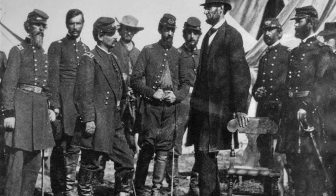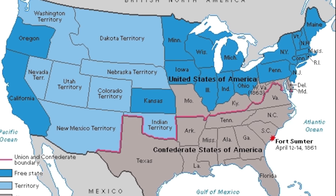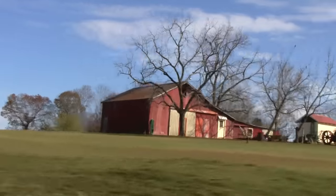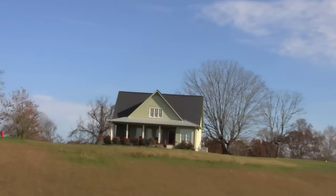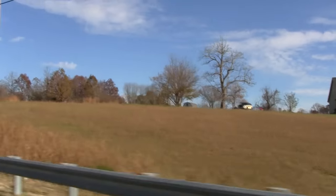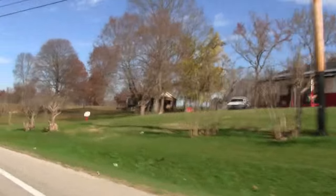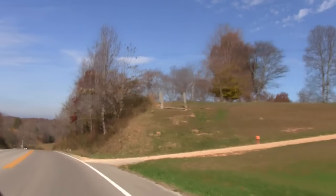Abraham Lincoln called upon several states to furnish 75,000 troops to suppress combinations in the seceded states too powerful for the law to contend with. This escalates into a conflict more often termed in history as the Civil War, or the War Between the States, which lasts from 1861 to 1865. The two factions were the Union, meaning the northern states, and the Confederates, meaning the southern states.